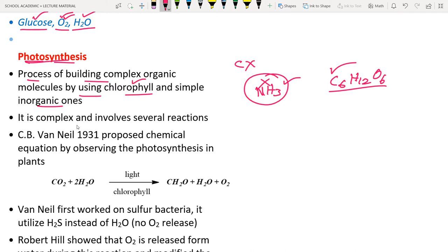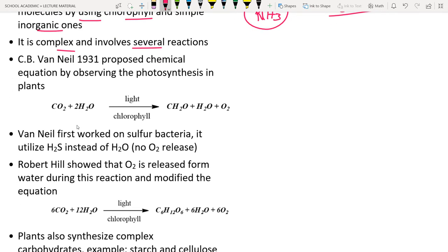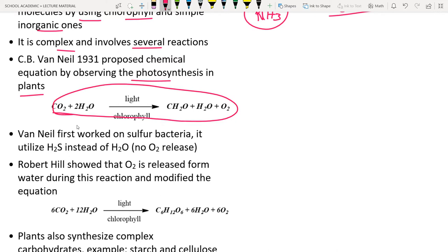The first scientist to propose a chemical equation for photosynthesis was C.B. Van Niel in the year 1931. He observed that carbon dioxide and water, along with sunlight and chlorophyll, are utilized for the production of carbohydrate, water, and oxygen.